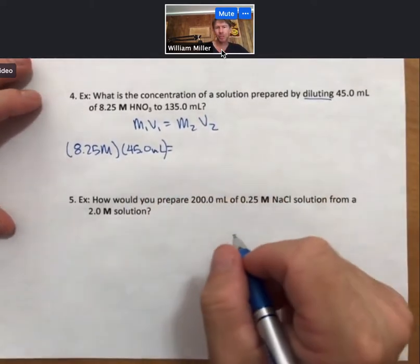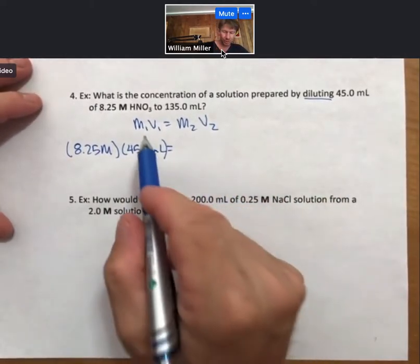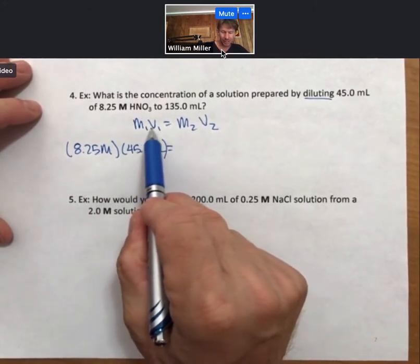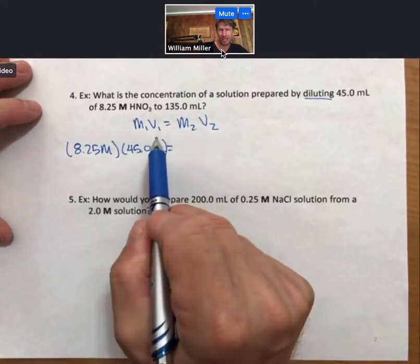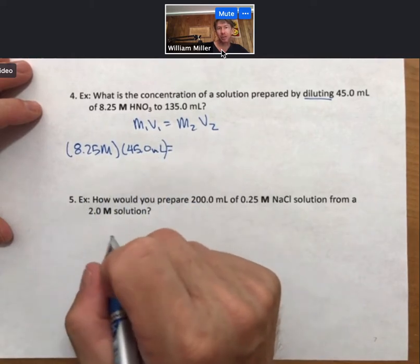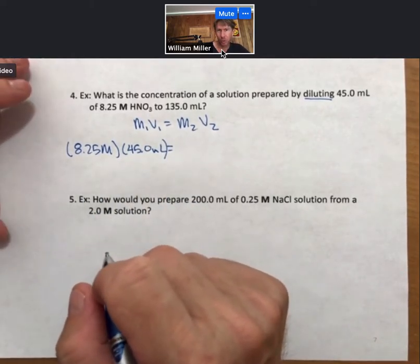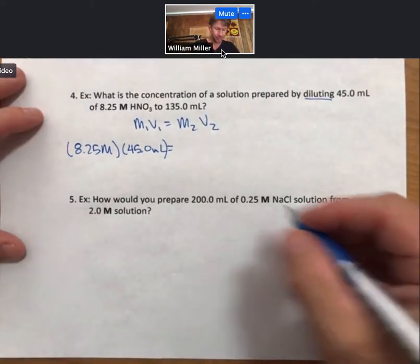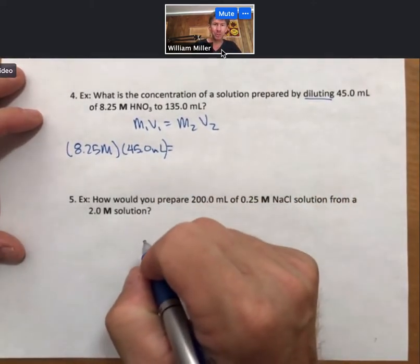Another good point is that when you're using the dilution formula, that as long as the volume units are the same, you can use liters or milliliters or other units, although liters and milliliters are almost exclusively what we use. So we're going to use milliliters when we use the formula this time.